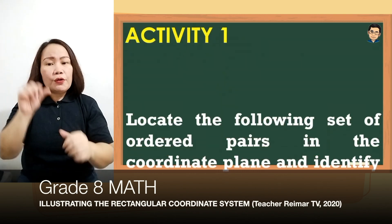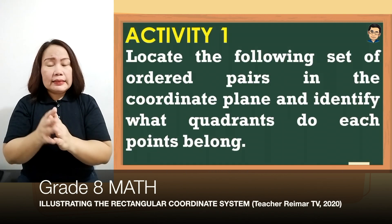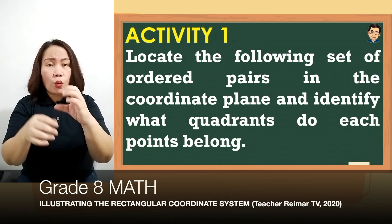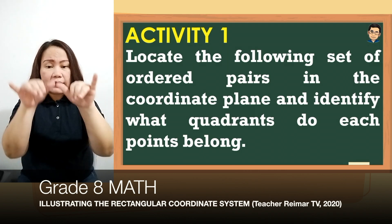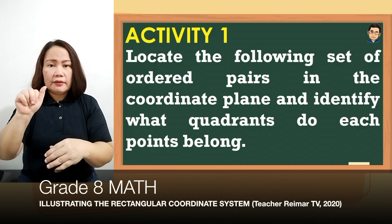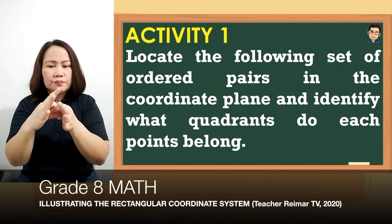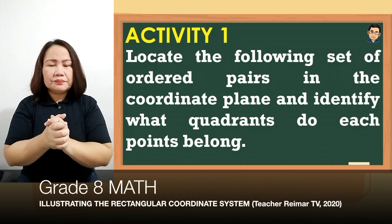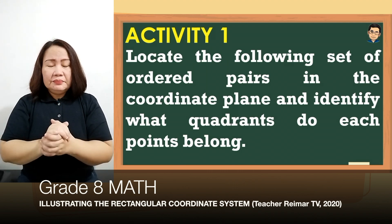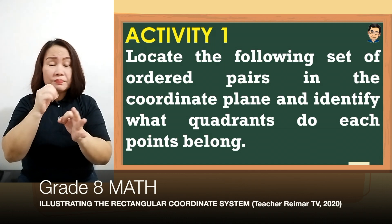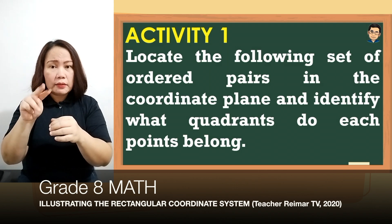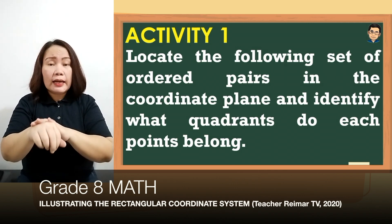For activity number 1, locate the following set of ordered pairs in the coordinate plane and identify what quadrants each point belongs to. Una-muna nating gagawin is locate kung nasaan yung mga ordered pairs, and then after malocate yung ordered pairs, i-identify natin anong quadrant na bibilang yung mga points. Kung hindi sila nabibilang sa quadrants, nandun po sila sa coordinate axis — maaring nasa x-axis o kaya naman y-axis.